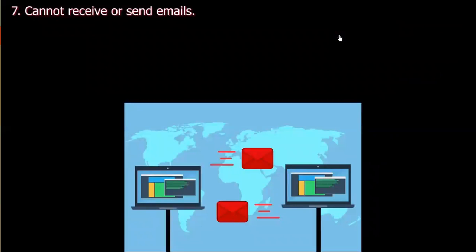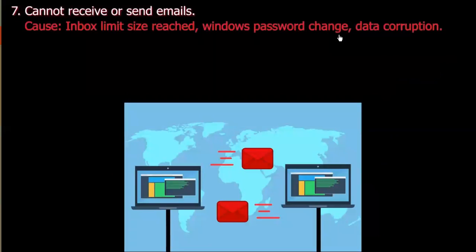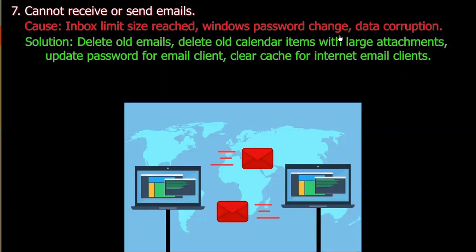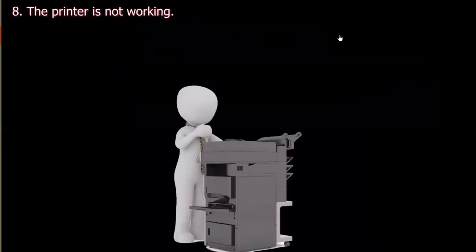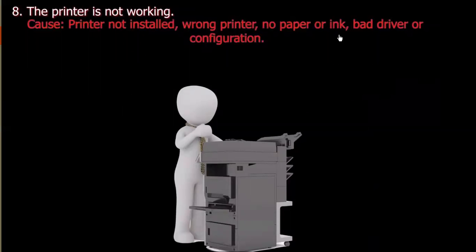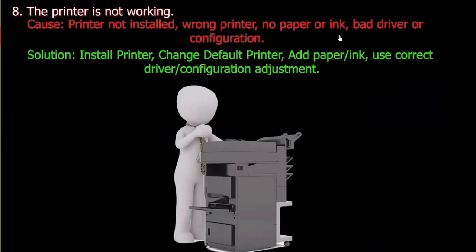Number seven: Cannot receive or send emails. Cause: Inbox limit size breached, Windows password change, or data corruption. Solution: Delete emails or calendar items with large attachments, update password for email client, and clear cache for internet email clients. Number eight: The printer is not working. Cause: Printer not installed, wrong printer selected, no paper or ink, or bad driver/configuration. Solution: Install the printer, change the default printer, add paper or ink, use the correct driver configuration and adjust it.